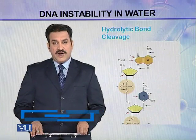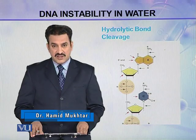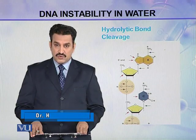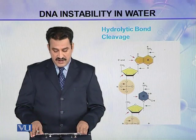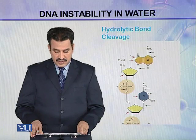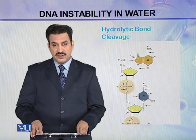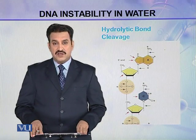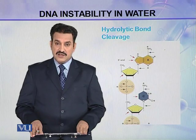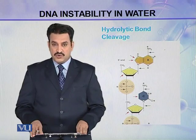In this diagram, arrows point to the different bonds which can be broken by hydrolytic cleavage, with different colors indicating different types of bonds. You can see phosphodiester bonds, glycosyl bonds, and some other bonds as well.